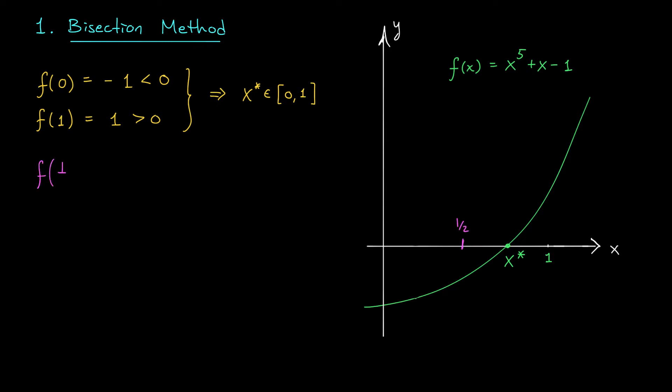In this case, my midpoint is 1 half. And if you punch in f of 1 half to your calculator, you should get minus 0.46875. It's a negative number, right? Ah, but wait a second. f of 1 was a positive number. So again, we can use the intermediate value theorem to hone in on the location of our root. This tells me that x star is somewhere between 1 half and 1.